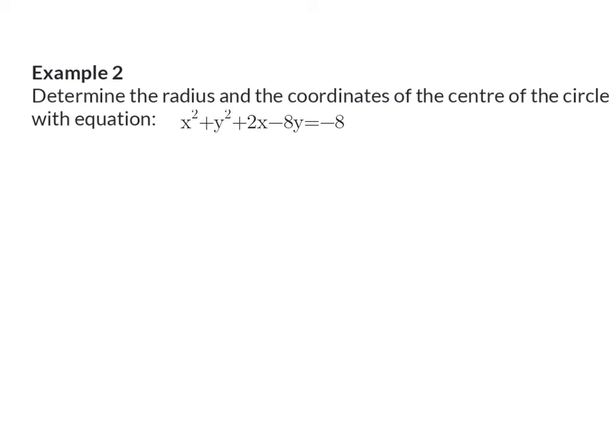Our first step will be to rearrange. So we are going to have x squared plus 2x plus y squared minus 8y equals minus 8.